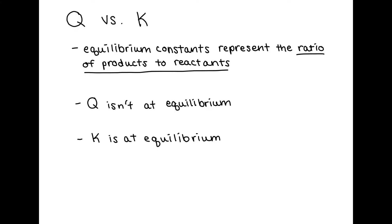When it comes down to it, Q and K, which are equilibrium constants, are basically ratios of products to reactants. If you only leave this video knowing one thing, it should be that Q and K represent a ratio of products to reactants.